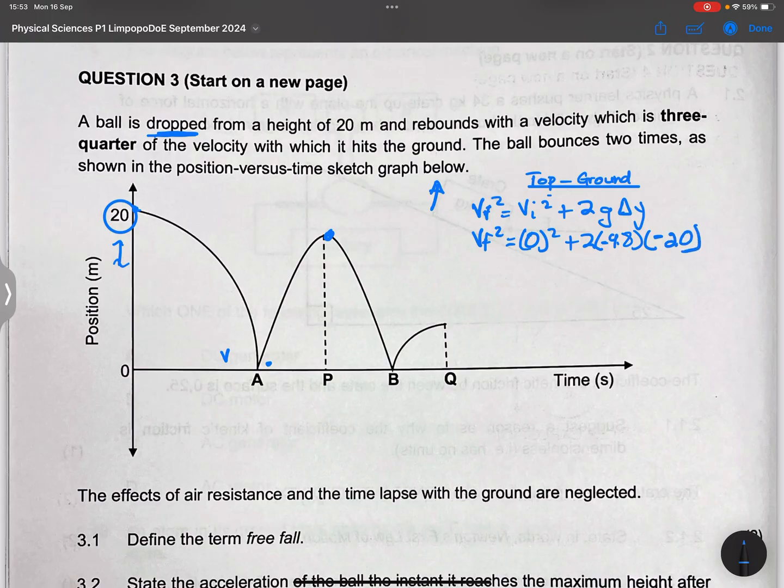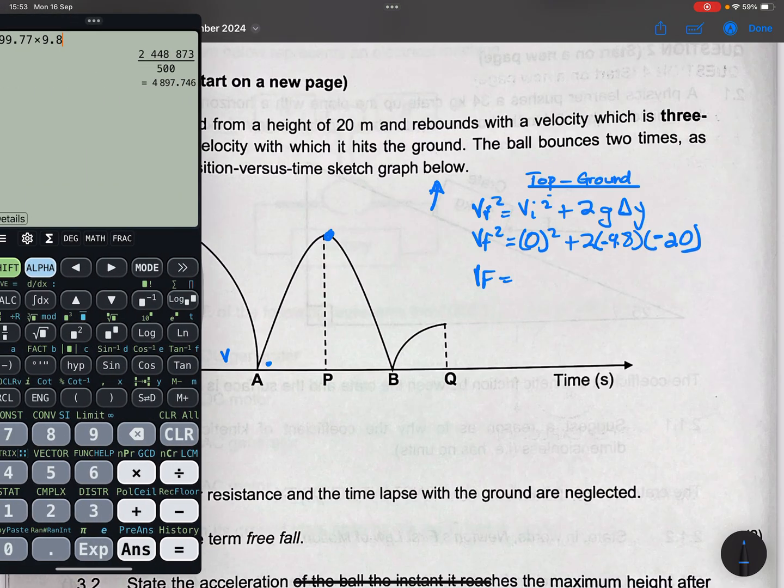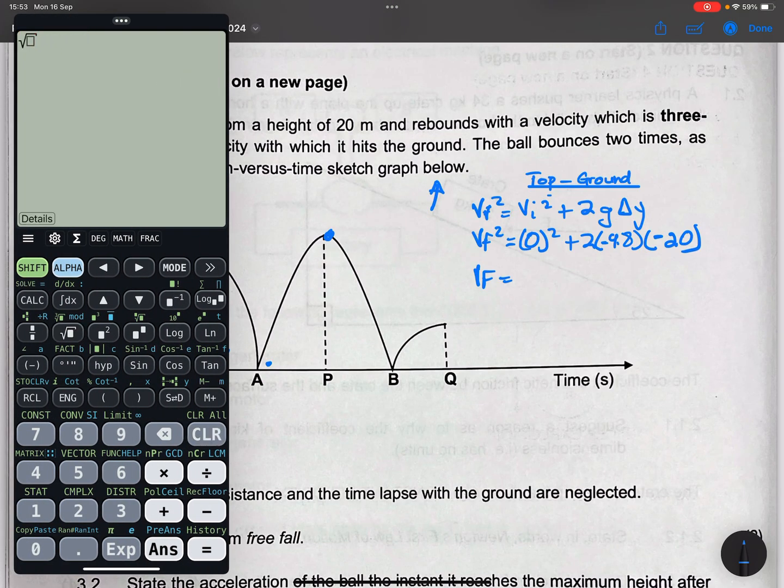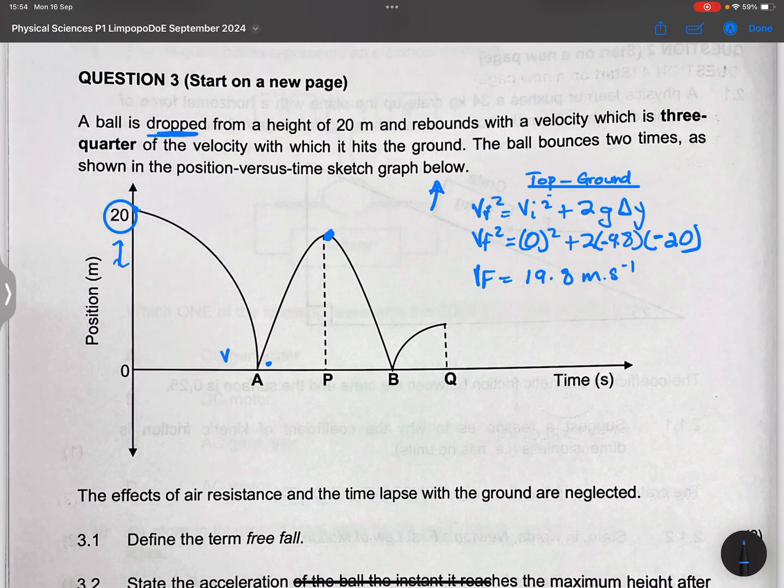In this case, our final velocity will be the square root of all of that. So I get a velocity of 19.79 or let's say 19.8 meters per second. Now of course, it was going down. So that should be negative because I've chosen up as positive.